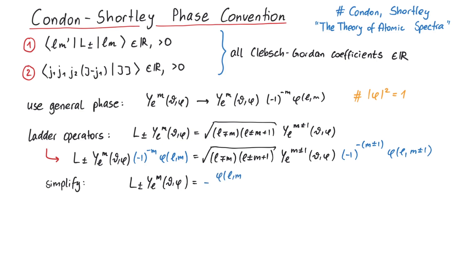If we simplify this a bit, we can put all new factors to the right and collect them in front of the square root. Just to be clear, this equation would be the result if we exchange the Condon-Shortley phase inside the spherical harmonics with a general phase phi.